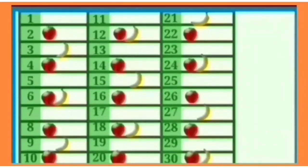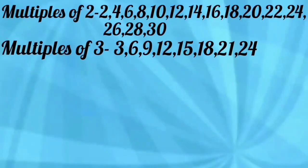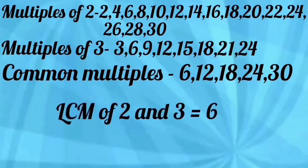Now let us see which roll number got both: 6, 12, 18, 24 and 30. Students, now look at these multiples of 2 and 3 carefully. Common multiples are 6, 12, 18, 24 and 30. But out of these multiples, the smallest common multiple is 6. So LCM of 2 and 3 is 6.